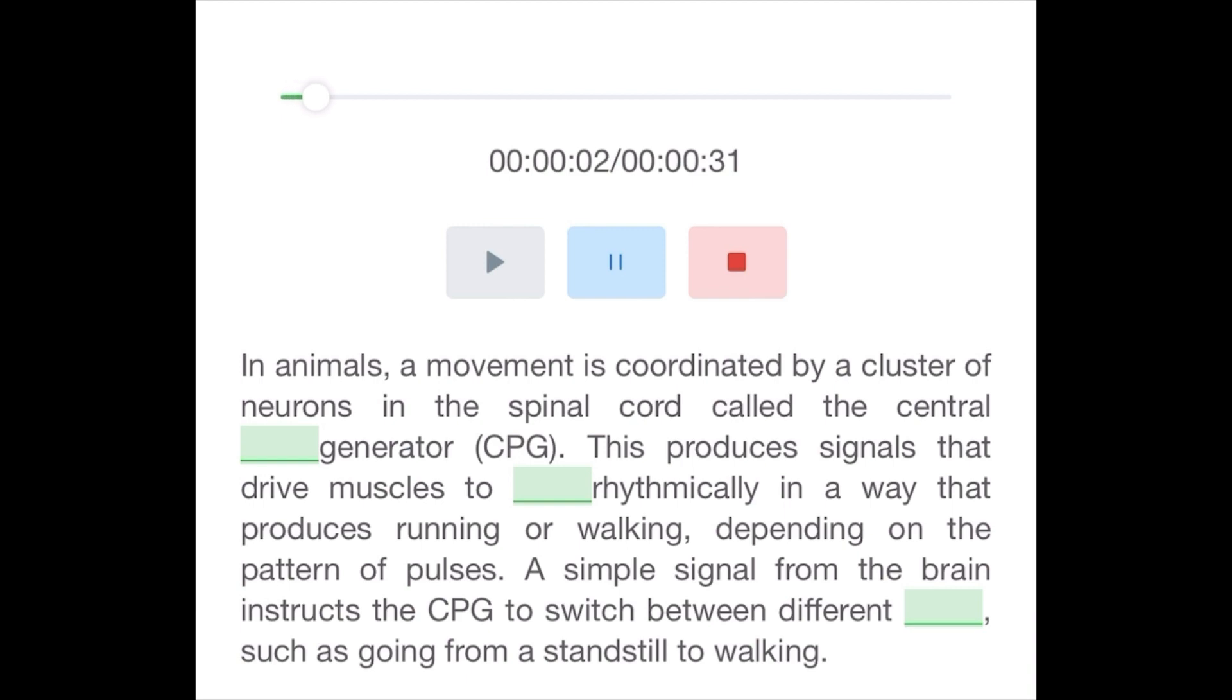In animals, movement is coordinated by a cluster of neurons in the spinal cord called the central pattern generator, or CPG. This produces signals that drive muscles to contract rhythmically in a way that produces running or walking, depending on the pattern of pulses. A simple signal from the brain instructs the CPG to switch between different modes, such as going from a standstill to walking.